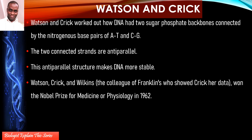The 3' and 5' notation refers to the carbon atoms on the sugar. Since both the sugar and the nitrogenous base contain carbon atoms, prime notation is added to distinguish the carbons on the pentose sugar. So you have 1', 2', 3', 4', and 5' carbons on the pentose, distinguishing them from the carbons on the nitrogenous base.